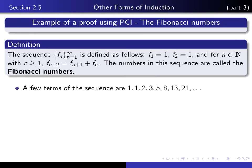So here are a few terms of the sequence. We begin with f1 is 1, f2 is 1, then we get f3 by adding the previous two, we get f4 by adding those two, we get f5 by adding these two, we get f6 by adding these two, etc.